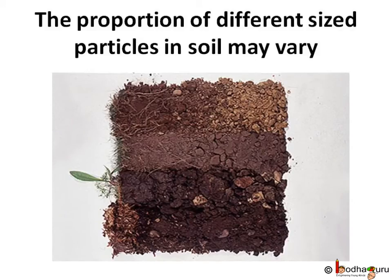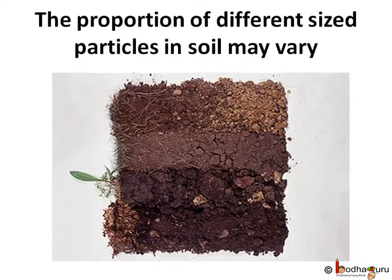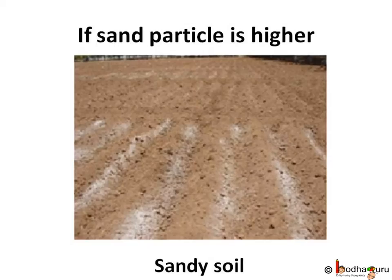After knowing so much about the soil, it would be easy to understand why there are different types of soils. Collect soil from different places and observe them carefully. You would find that the proportion of particles of various sizes like sand, clay, gravel or humus in soil is not always the same. Because of this difference, all soils do not have the same ability of holding air and water. Thus, different types of soil exist.